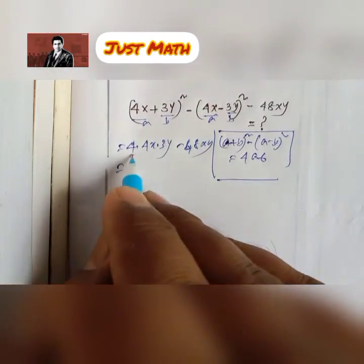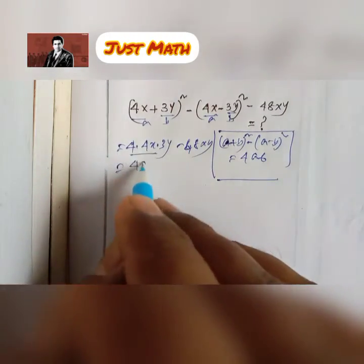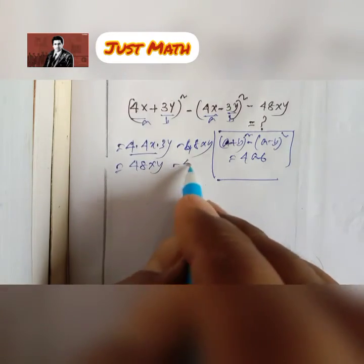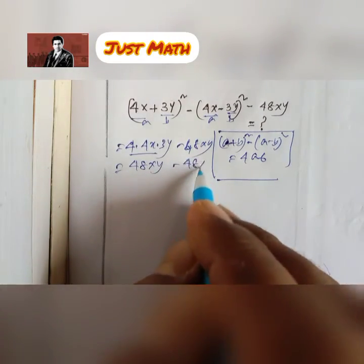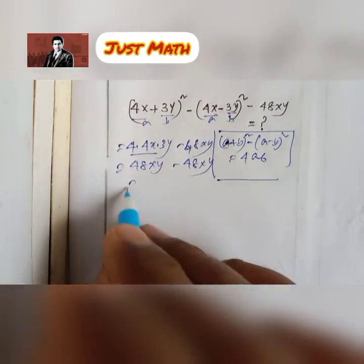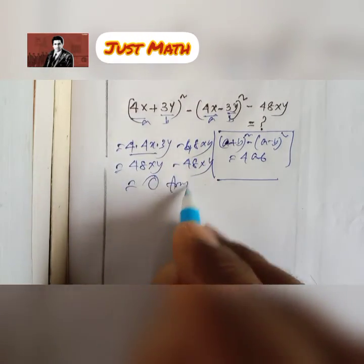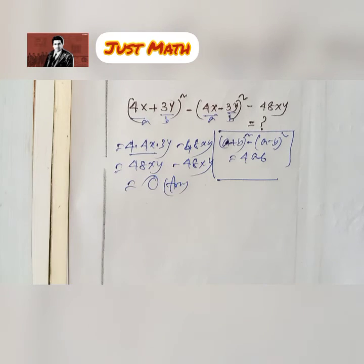4 × 4x × 3y equals 48xy, so 48xy minus 48xy equals 0. That is the answer. Thank you very much for watching my video.